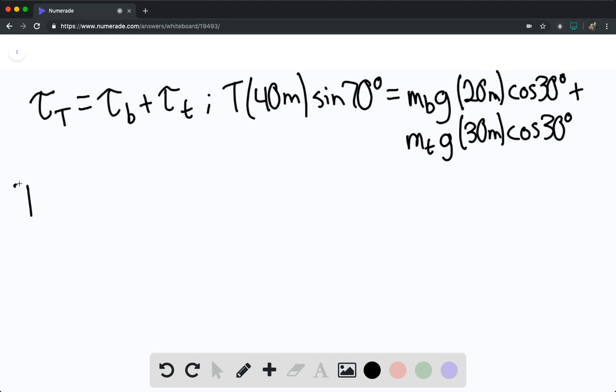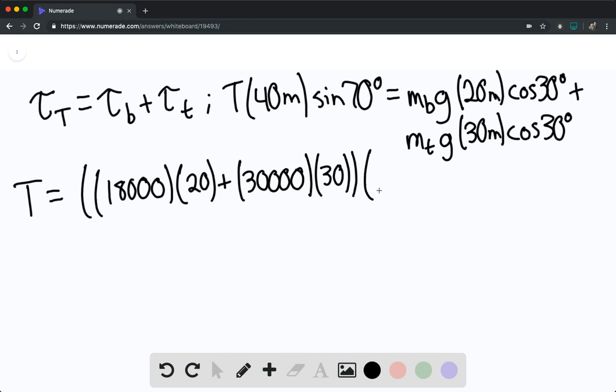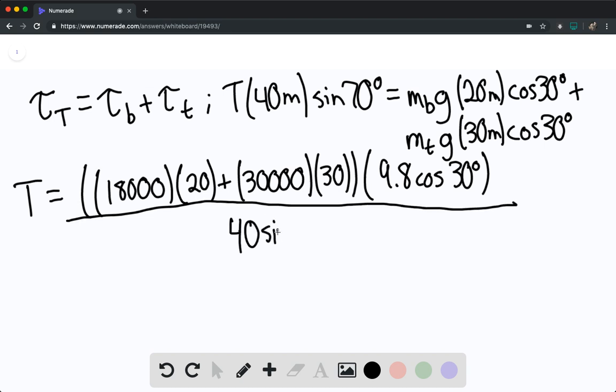Solving for T, we have T equals 18,000 times 20 plus 30,000 times 30, and then this entire thing multiplied by 9.8 cosine of 30 degrees, divided by 40 sine of 70 degrees.